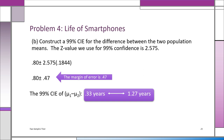Constructing a 99% confidence interval for the difference between the two population means: the center is 0.8 years (the difference between sample means). The Z value for 99% confidence is 2.575, multiplied by the standard error 0.1844, giving a margin of error of 0.47 years. The 99% CI runs from 0.33 years to 1.27 years.